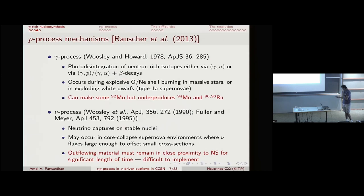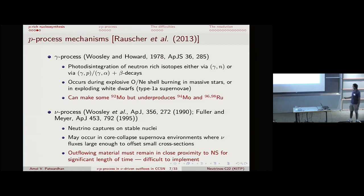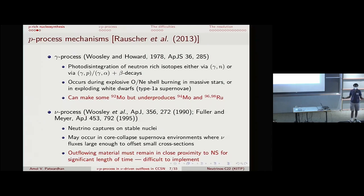Generically, anything that makes proton-rich elements is referred to as the P process, and many different kinds have been suggested in the literature. One is the gamma process, a secondary process where you first make S or R-process nuclei and convert them into proton-rich nuclei through photo-disintegration. This can happen in explosive shell burning in massive stars or in exploding white dwarfs. The problem is it can make some molybdenum-92 but not much of the others.